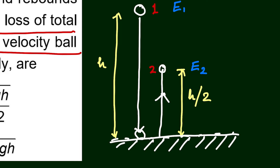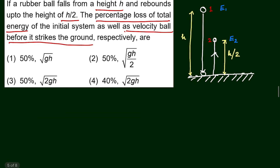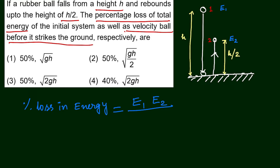Now let us find out the percentage loss of energy. The formula is: percentage loss in energy equals (E1 minus E2) divided by E1, multiplied by 100. We divide by E1 because the original position energy was E1, and we multiply by 100 to express it as a percentage.